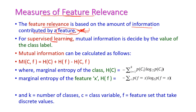When we come to supervised learning, the mutual information is decided by the value of the class label. The mutual information is very important and should be calculated as MI of C, F which is equal to H(C) plus H(F) minus H(C, F).